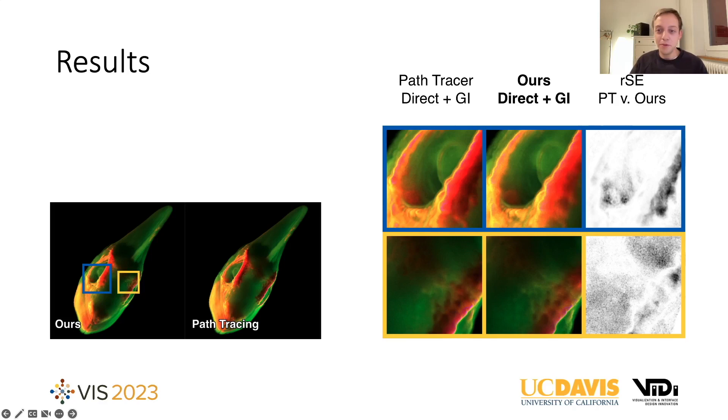At the same time, we can achieve close to four times speed up in our renderer compared to the path tracer. And when we only consider the timings for generating the global illumination component, we see more than 12 times speed up on this data set. And for other data sets that we tested, we achieve similar numbers. And you can find those in the paper and the supplemental.